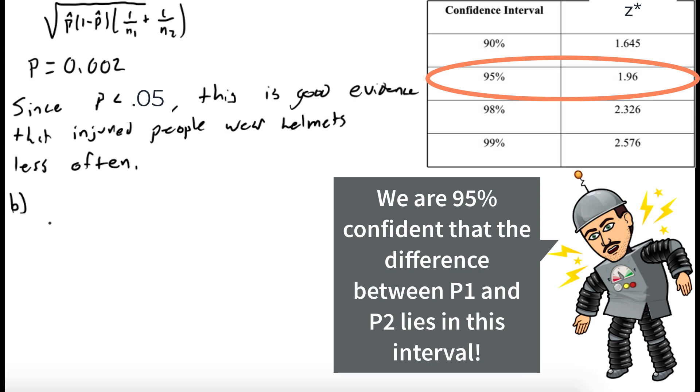Part B: We're asked to find a 95% confidence interval, so we need Z star. Looking at a table, we see that Z star equals 1.960. The confidence interval for P1 minus P2 is P1 hat minus P2 hat plus or minus Z star times the square root of P1 hat times 1 minus P1 hat over N1 plus P2 hat times 1 minus P2 hat over N2.